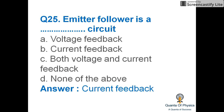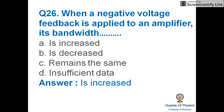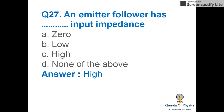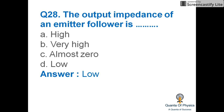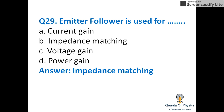Emitter follower is a current feedback circuit. When negative voltage feedback is applied to an amplifier, its bandwidth is increased. An emitter follower has high input impedance and low output impedance, and is used for impedance matching.